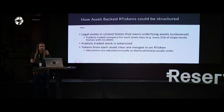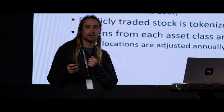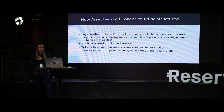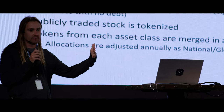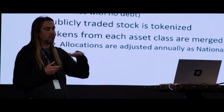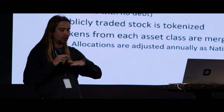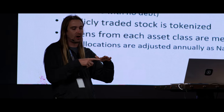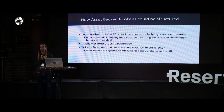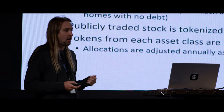If we wanted to turn the asset-backed dollar concept into an R token, we need to tokenize the underlying asset classes. For example, for U.S. single family homes, you form a legal entity that owns about a billion dollars of single family homes unlevered, take that company public with professional management, and then that publicly traded stock can be tokenized. You put it at the level where all laws comply with U.S. or local regulations, but the ownership of that publicly traded stock can be tokenized. You then take the tokens from every asset class and merge them into an R token based on their pro rata share of total global wealth, and rebalance annually.